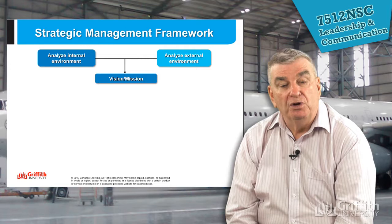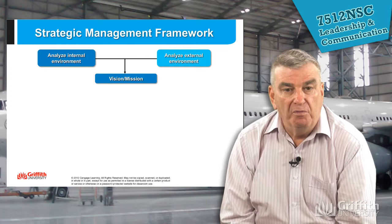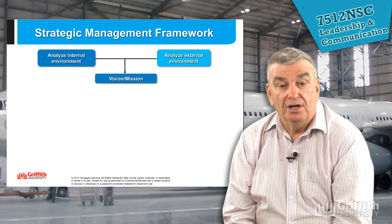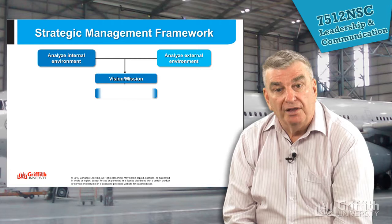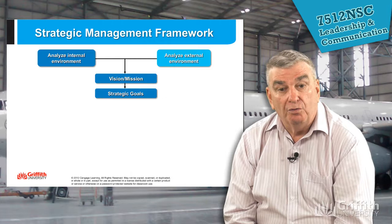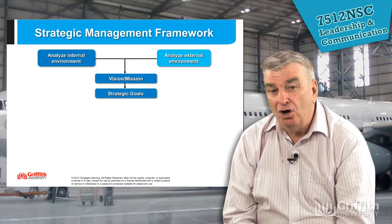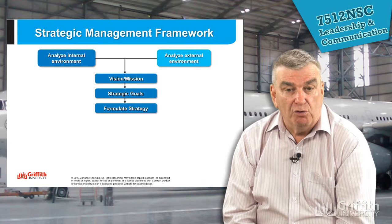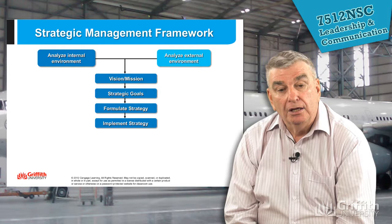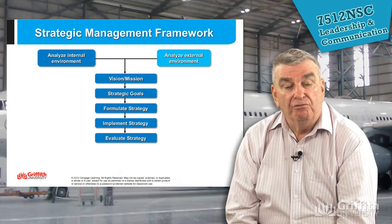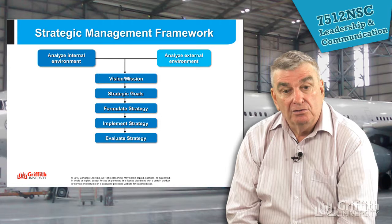We'll talk about the vision and the mission. The mission is what we do today; the vision is where we want to be in the future. The gap between the vision and the mission is what we have to close — that's the change we have to bring about. Once we know that gap, we can put that into strategic goals. For every strategic goal, we determine the best way of achieving it — that's the strategy we pick. We formulate the different strategies and turn them into action plans, implement those action plans, and evaluate how we're going.